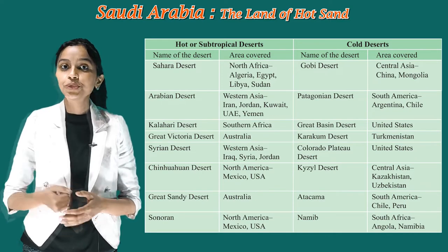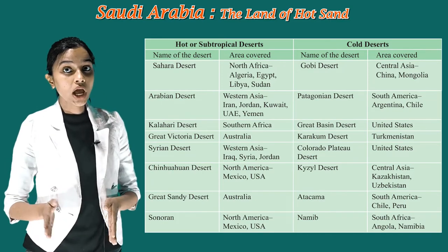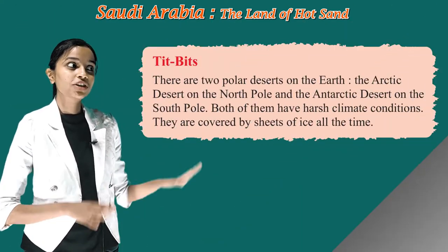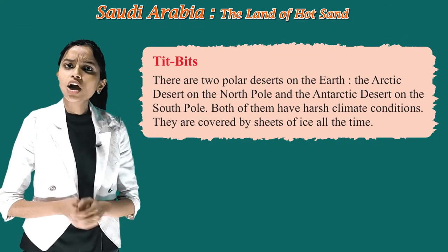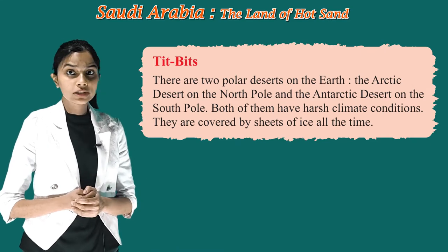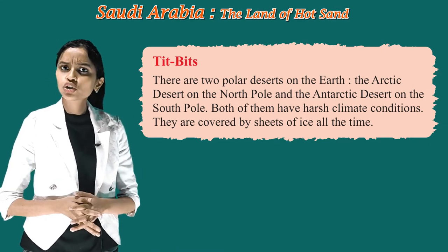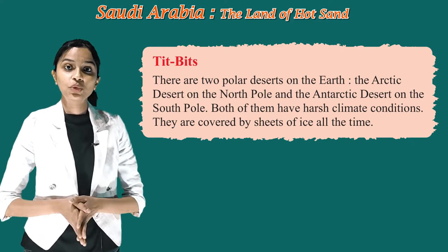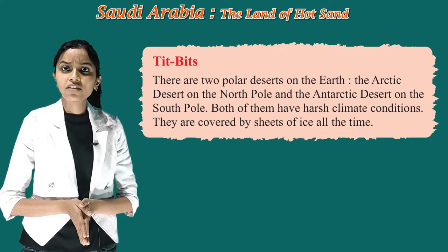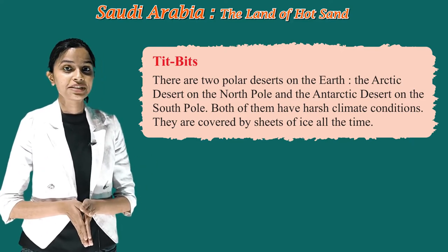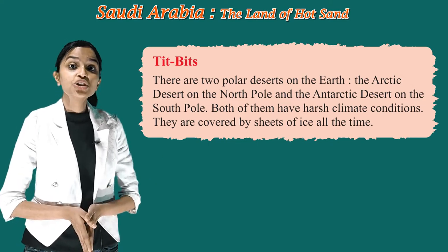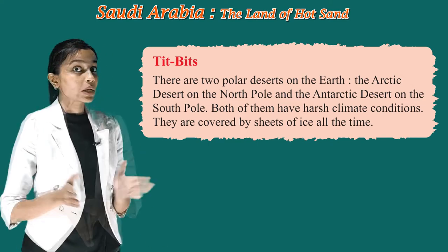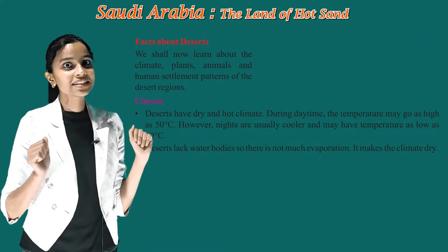Now children, it's time for tidbits. There are two polar deserts on the earth — the Arctic Desert on the North Pole and the Antarctic Desert on the South Pole. Both have harsh climate conditions and are covered by sheets of ice all the time.